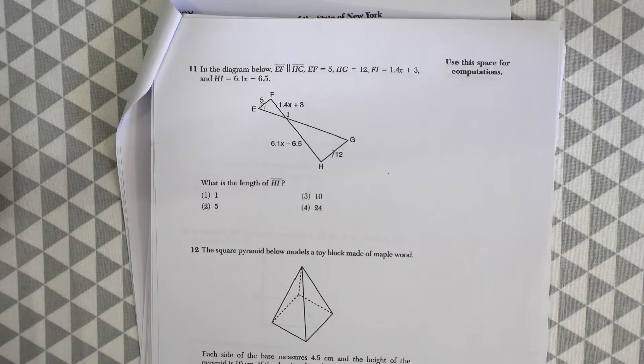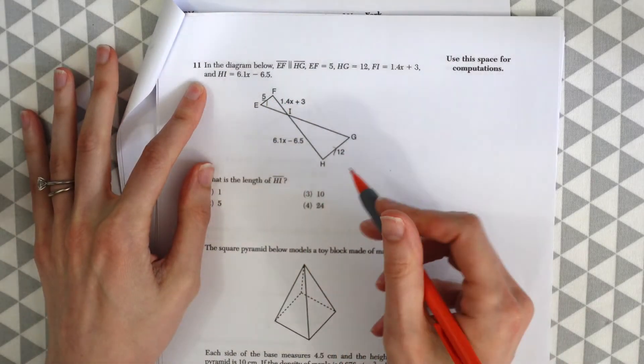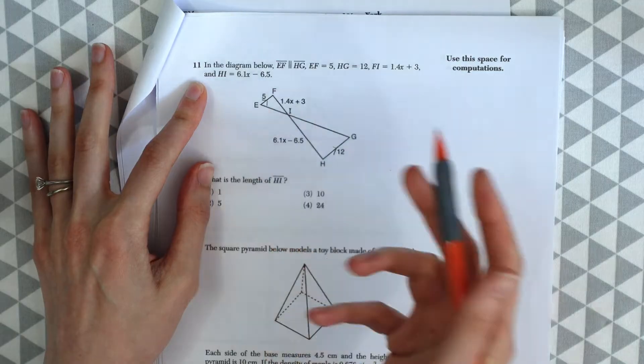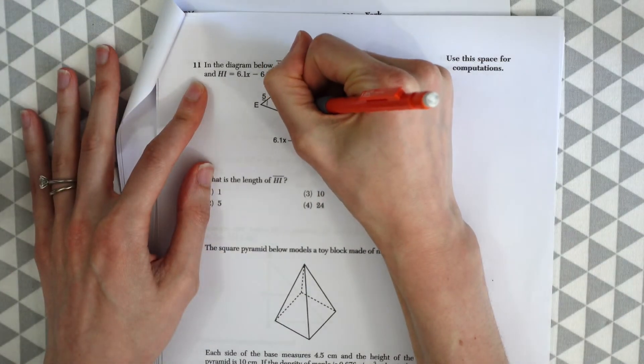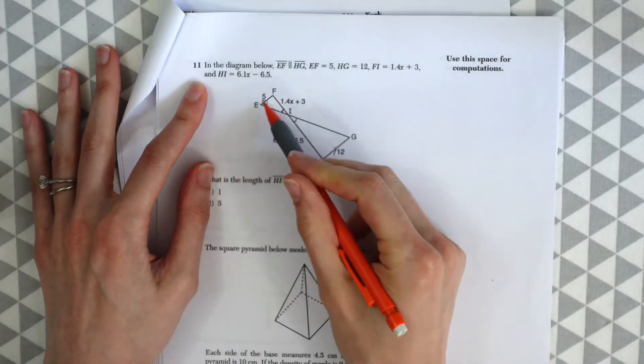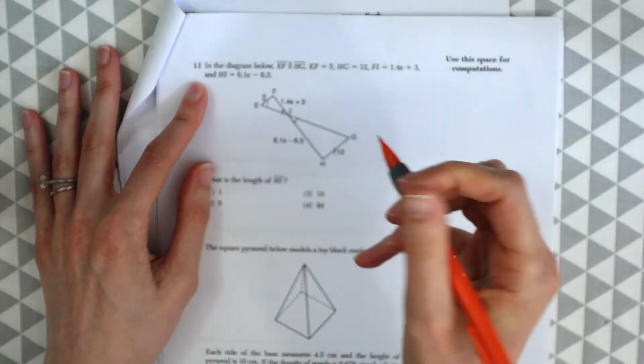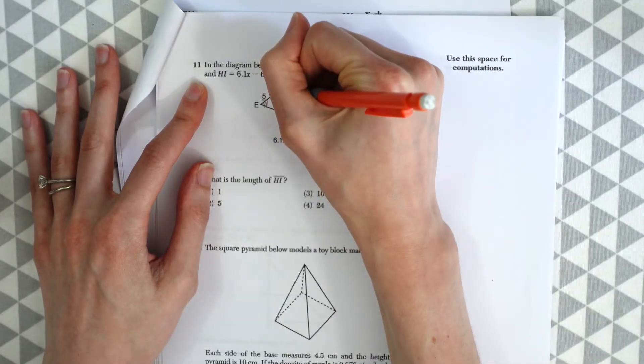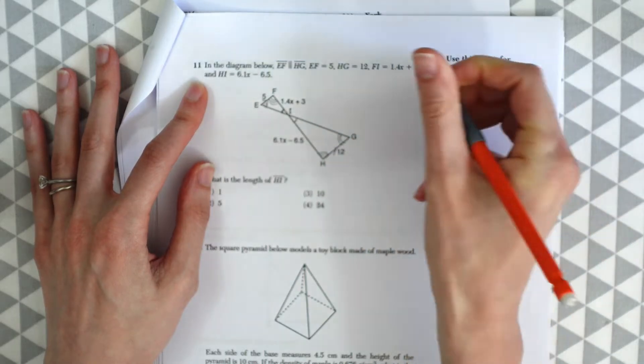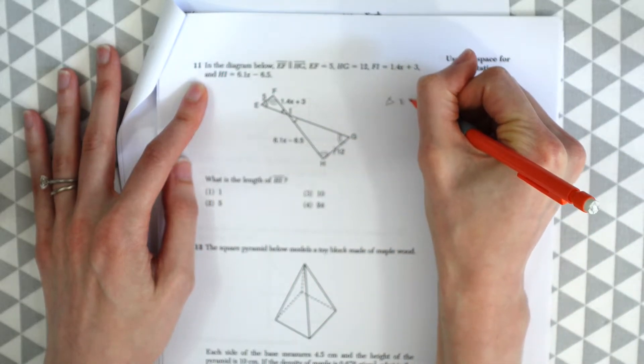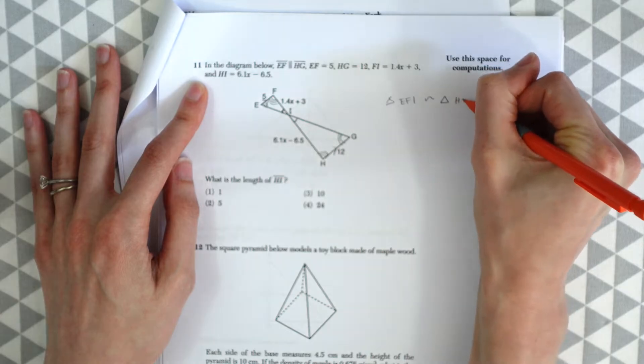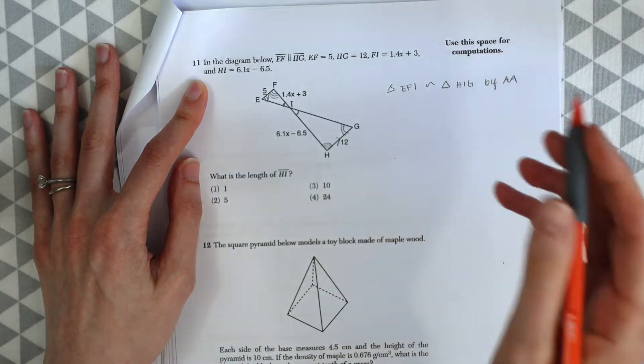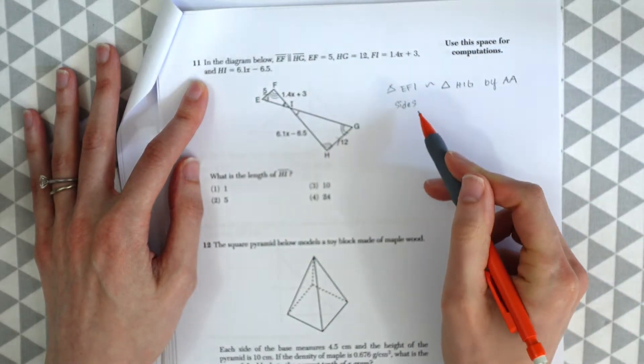So the trick here is to realize that these are similar triangles. Since this is parallel, EF to HG, this means that both of these lines are being cut by a transversal. So that gives us all these different congruent angles. We know that this is a congruent angle just based on vertical angles. But now with knowing these are parallel and being cut by a transversal, we know that alternate interior angles are also congruent. So angle G is congruent to angle E and angle F is congruent to angle H. So we know that triangle EFI is similar to triangle HIG by angle angle. Big deal. How's that going to help me find HI? What we know is that the sides are going to be in proportion because whenever we have similar triangles, it means the sides are in proportion.